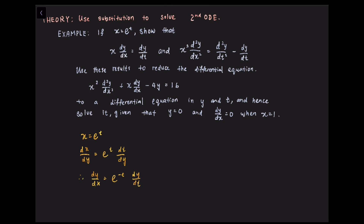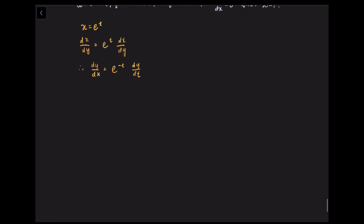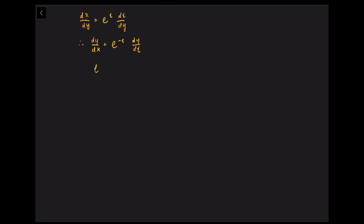Since y does not appear in the given relationship x = eᵗ, it is introduced by differentiating with respect to y. So we have x = eᵗ, which gives dx/dt = eᵗ·(dt/dy) upon differentiating. Flipping that gives dy/dx = e^(-t)·dy/dt. And so, x·dy/dx = dy/dt. This is the first relationship for x, y and t.